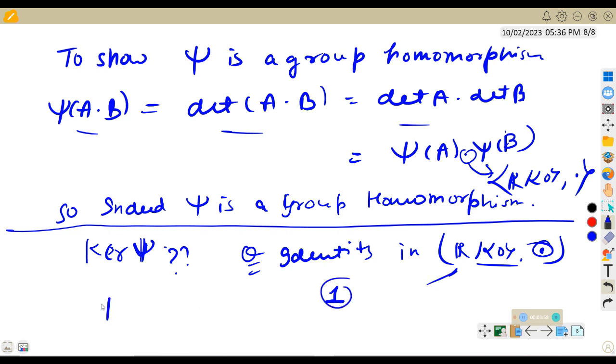Kernel of phi will be those such that phi of A is equal to 1. That is, those matrices with determinant A is equal to 1. And what are those matrices? These are the SL(n,R) set.